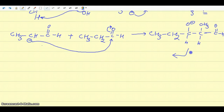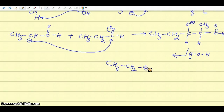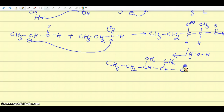This molecule is going to get a proton from a water molecule, because the solution is sodium hydroxide and water is present in the reaction mixture. What you get is basically the aldol product: CH with an OH — this hydrogen is coming from water — CH3, CH, and the aldehyde (C=O with H). So this is the aldol product.